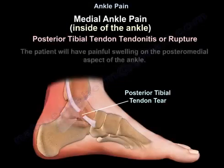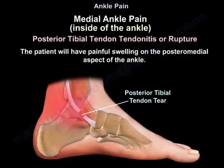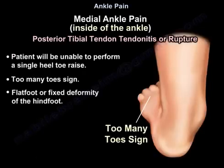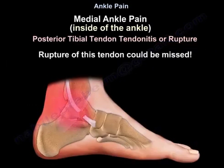The patient with posterior tibial tendon rupture will have painful swelling on the posteromedial aspect of the ankle. The patient will be unable to perform a single heel-toe rise and will show a too-many-toes sign, flat foot, or fixed deformity of the hindfoot. A rupture of this tendon could be missed.